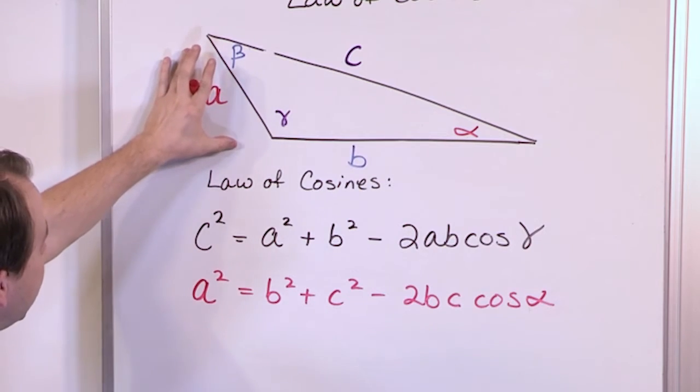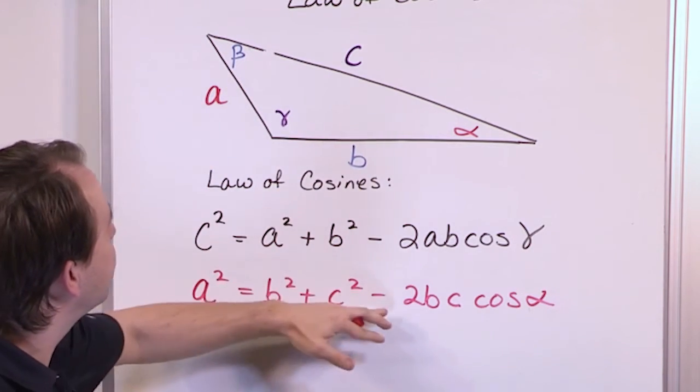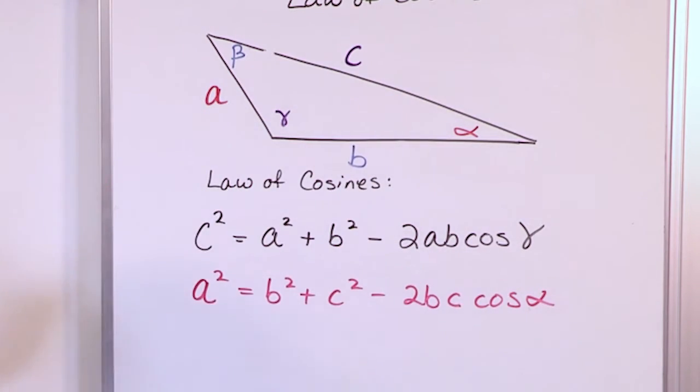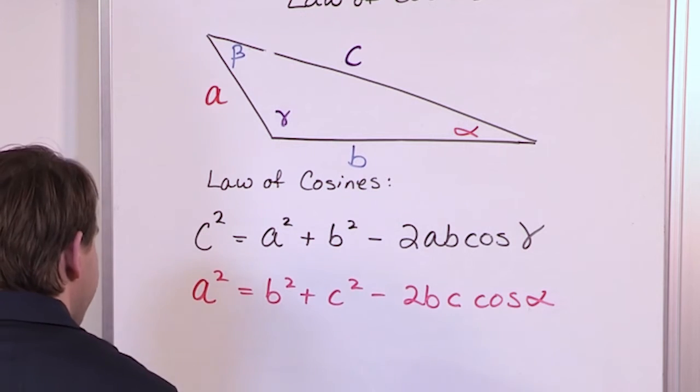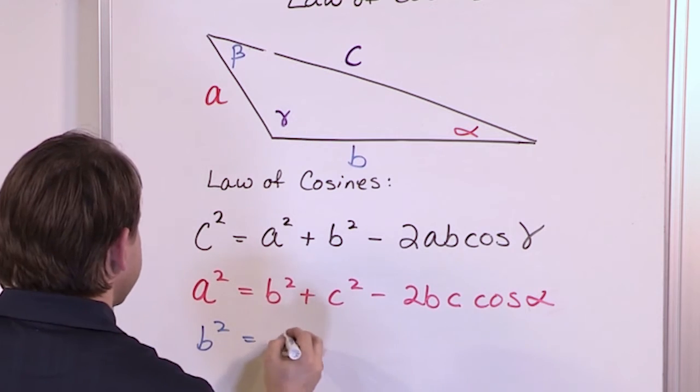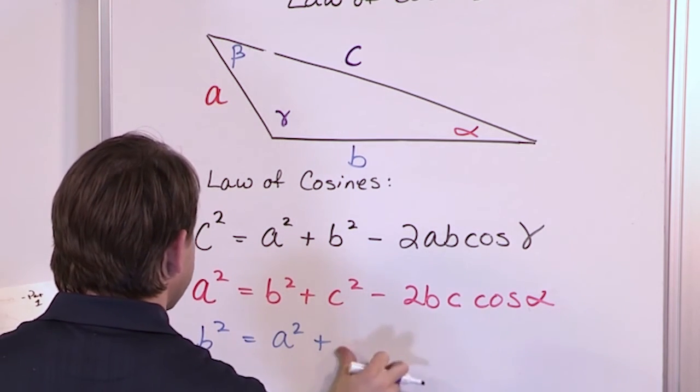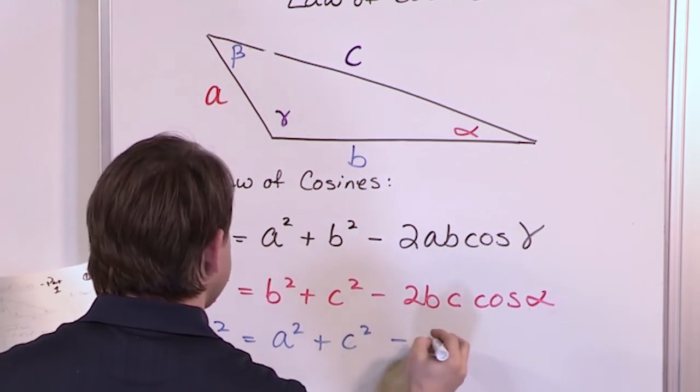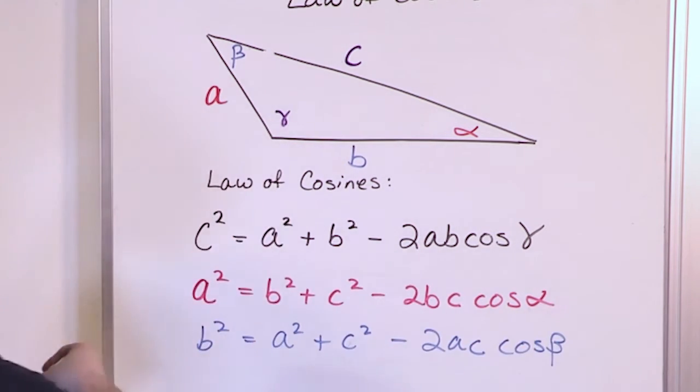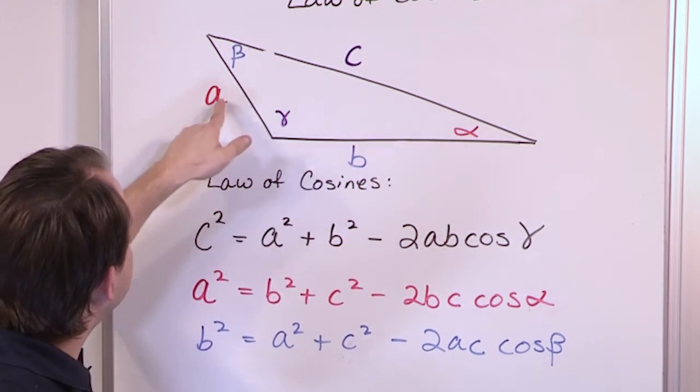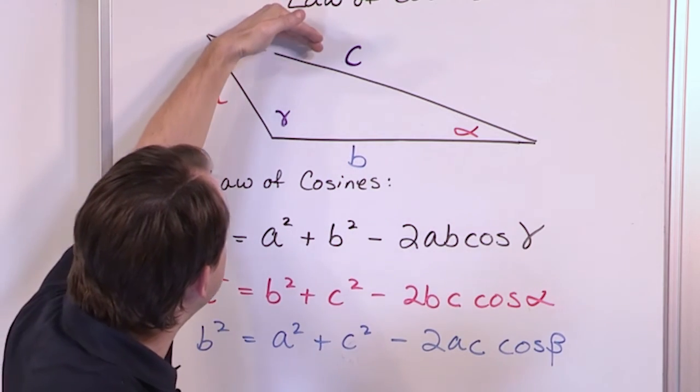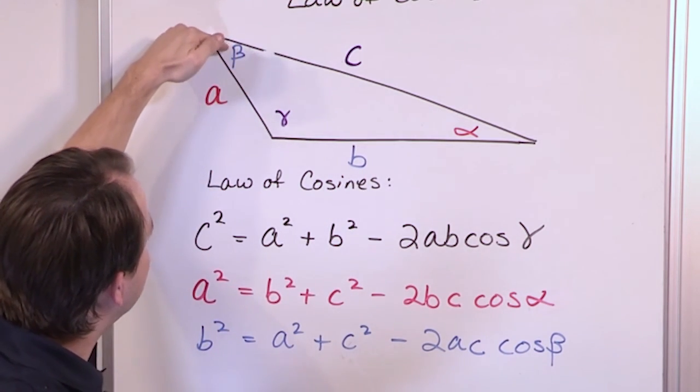So if I'm trying to find a it's just the Pythagorean theorem as usual but I subtract off 2 times this, the other two legs opposite and the cosine of the angle in the middle. And I bet you if you thought hard enough you could predict what the next one would be. B squared is a squared plus c squared minus 2 times a times c times cosine of beta. So if I'm trying to find side b, b squared is equal to the other two sides squared minus a term that is the other two legs times 2 times the cosine of the angle between them.